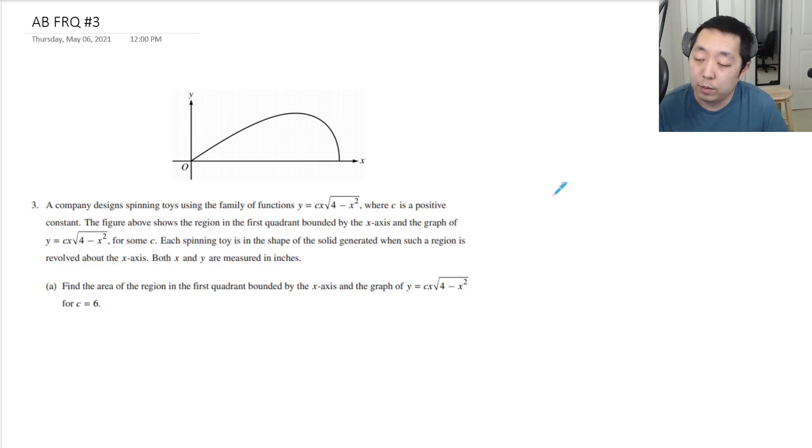A company designed spinning toys using the family of functions y = c·x·√(4-x²), where c is a positive constant. The figure above shows the region in the first quadrant bounded by the x-axis and the graph. Each spinning toy is in the shape of a solid generated when the region is revolved around the x-axis. Both x and y are measured in inches.